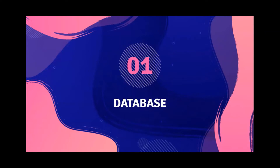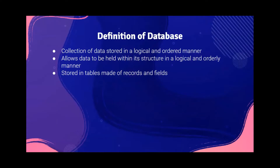So first, what is a database? A database is basically a collection of data that is stored in a logical or ordered manner. It has a structure which allows data to be held within it in a logical and orderly manner, and it is stored in tables made of records and fields. Basically, records are rows and fields are columns.